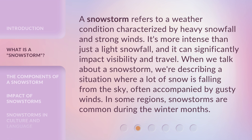A snowstorm refers to a weather condition characterized by heavy snowfall and strong winds. It's more intense than just a light snowfall, and it can significantly impact visibility and travel. When we talk about a snowstorm, we're describing a situation where a lot of snow is falling from the sky, often accompanied by gusty winds. In some regions, snowstorms are common during the winter months.